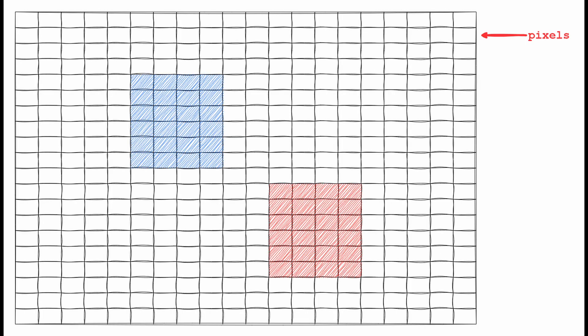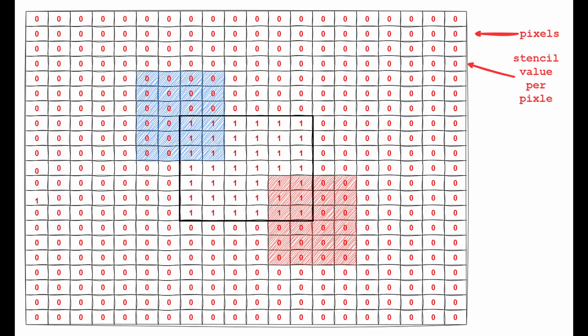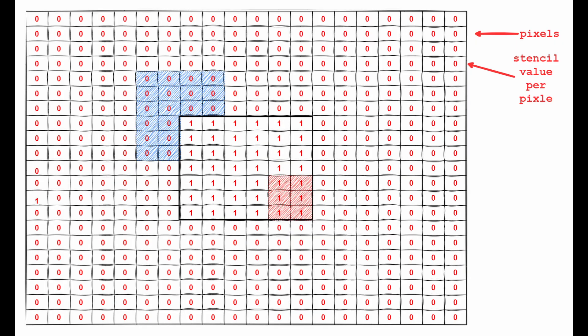First, let's understand how the stencil buffer works. Imagine we have a canvas with pixels. Each pixel of each object is rendered by the WebGL renderer. The stencil buffer holds a numeric stencil value for each pixel — by default the value is zero. Imagine we render an object which is invisible: it does not draw any color on the pixel, but instead writes a number into the stencil buffer for each of its own pixels. Other objects can access the stencil buffer value and based on that value either show or hide pixels.